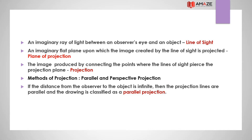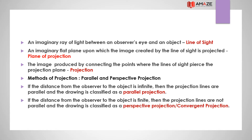If the distance from the observer to the object is finite, then the projection lines are not parallel and are classified as perspective projection or convergent projection. The projection lines converge at a point, which is why it is called perspective or convergent projection.